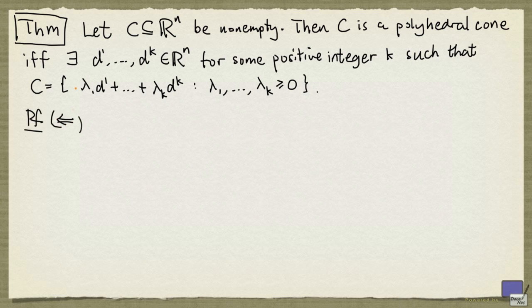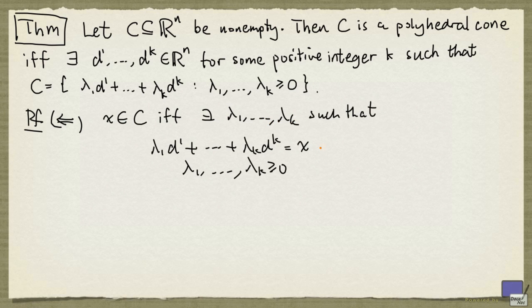We're going to give a sketch of this proof. First we prove sufficiency. Suppose that our set C can be written like this for some d^1 up to d^k. That means x is in C if and only if there exists λ_1 up to λ_k such that the following hold. This is a system of linear constraints. If we treat λ_1 up to λ_k and all the entries in x as variables, we can apply Fourier-Motzkin elimination to eliminate λ_1 up to λ_k to obtain a system that will involve only the x variables.